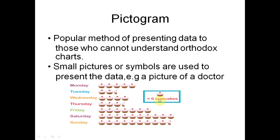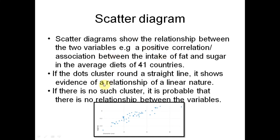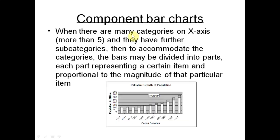A scatter diagram uses X and Y axes with two continuous variables and is used for correlation. A positive correlation goes upward; a negative correlation goes downward. Each dot represents the relationship between one value on the X axis and one value on the Y axis.